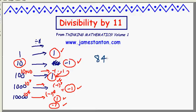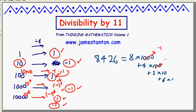Alright, so let's take a number like 8,426. That is really 8 groups of 1,000, and 4 groups of 100, and 2 groups of 10, and 6 groups of 1. Upon division by 11, 1,000 leaves the same thing as negative 1. And 100 leaves the same remainder as 1. And 10 leaves the same remainder as negative 1. And 1 leaves the same remainder as 1.